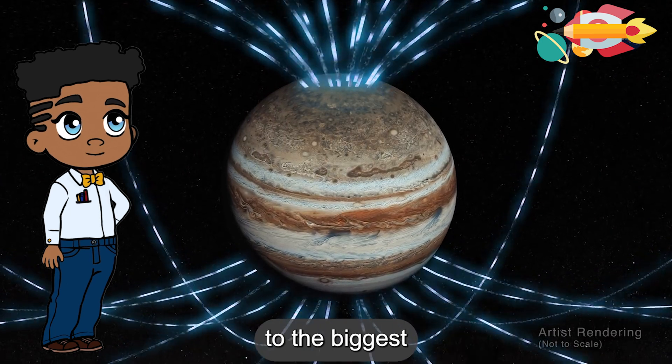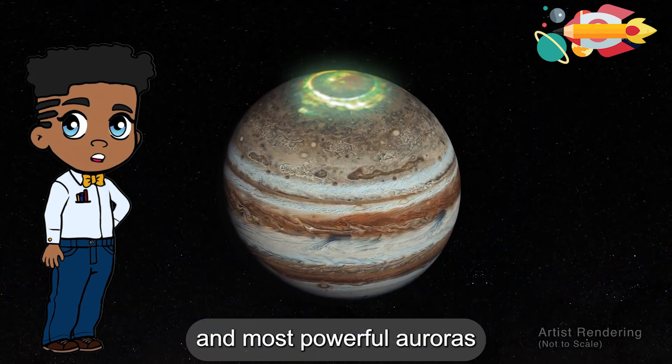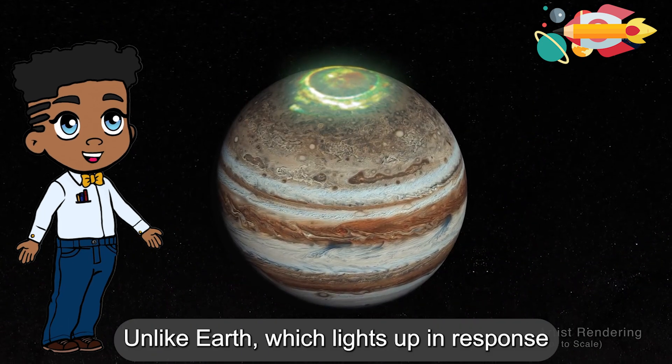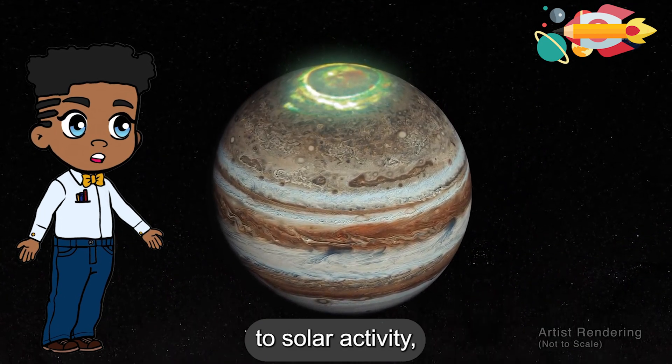Jupiter's magnetic field is home to the biggest and most powerful auroras in the solar system. Unlike Earth, which lights up in response to solar activity,